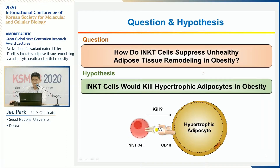Given that iNKT cells are known to kill certain damaged cells such as cancer cells and dysregulated T-regulatory cells, we hypothesized that iNKT cells would kill hypertrophic and unhealthy adipocytes in obesity to maintain adipose tissue homeostasis.